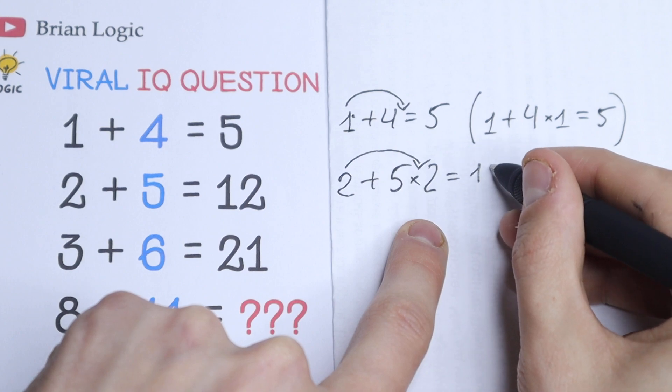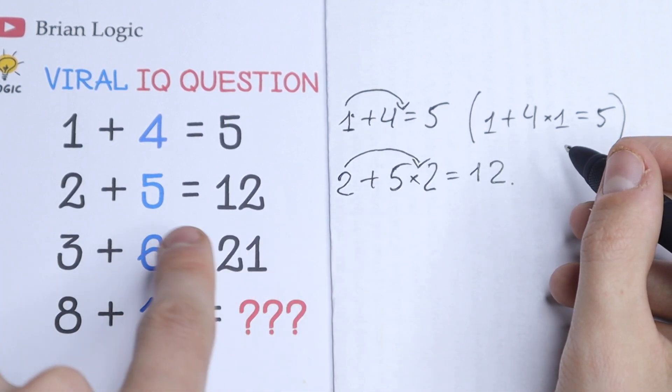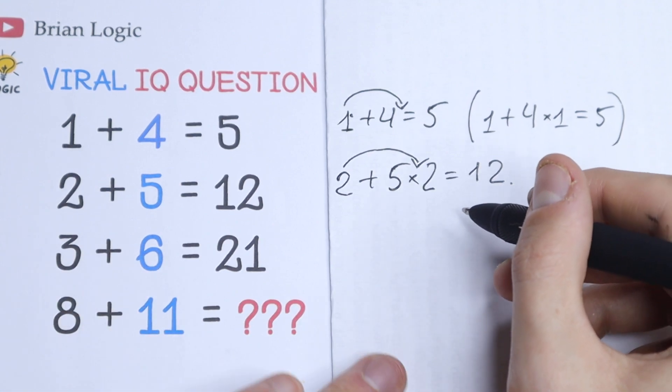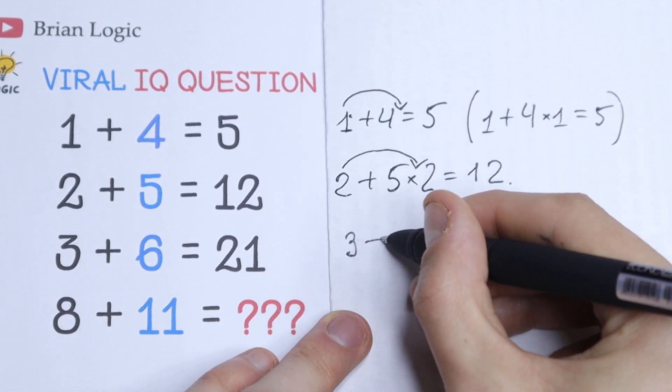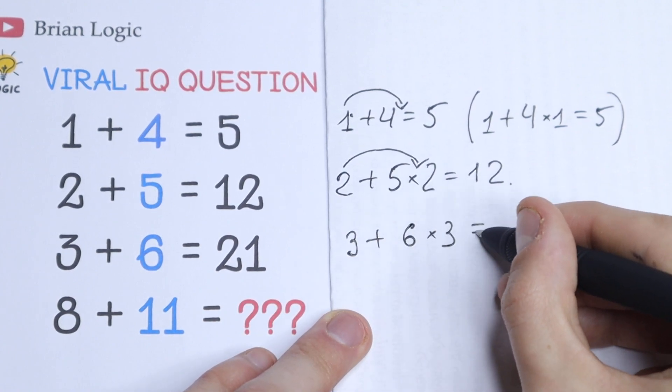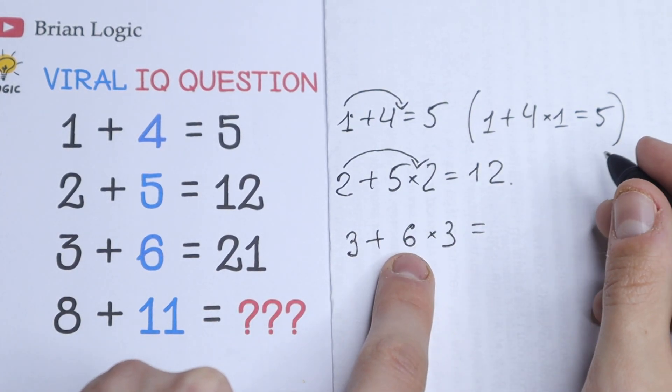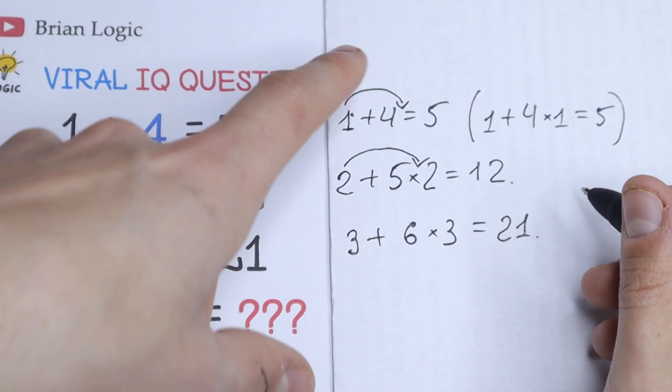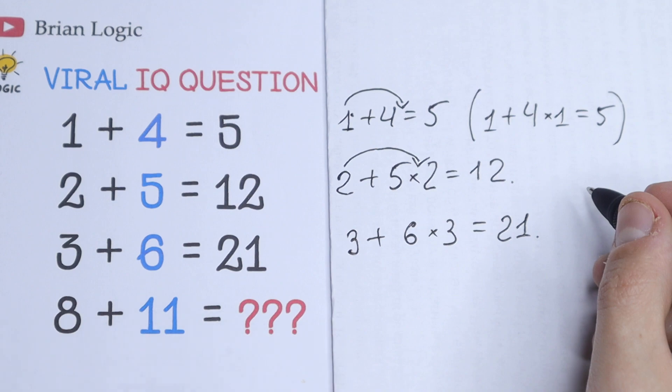So let's use the same logic right here in every moment. Let's multiply this 3 by this 6. What we will have? 3 plus 6 times 3, and it will be equal to 18 plus 3, it will be 21. So as you can see this logic works, every step is correct.